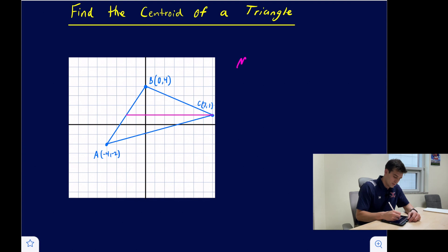Let's find the midpoint of AB. For the midpoint we just add the x-coordinates together and divide by two: negative four plus zero divided by two. And then we add the y-coordinates together: negative two plus four divided by two.